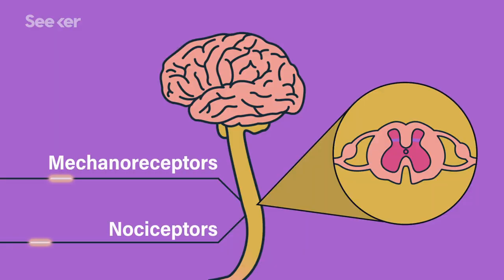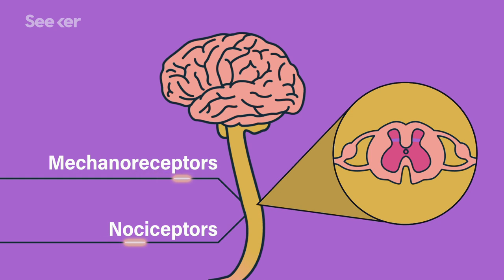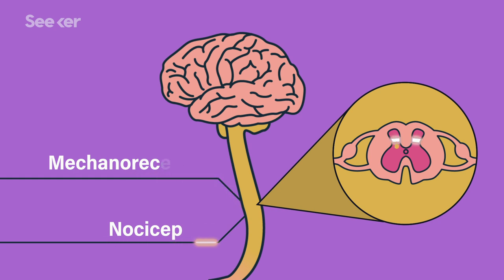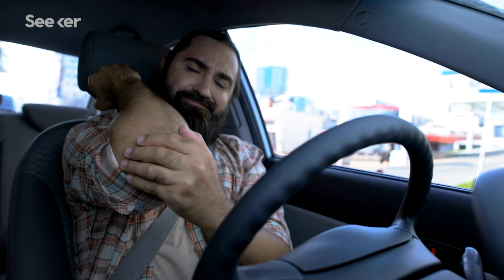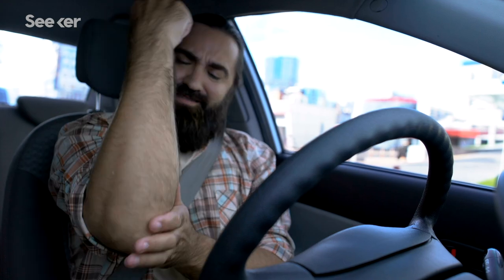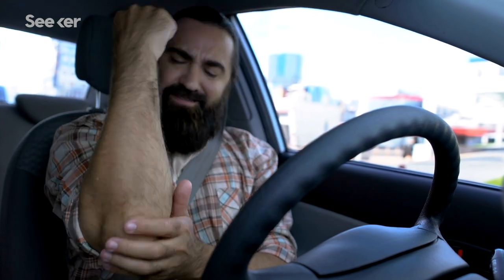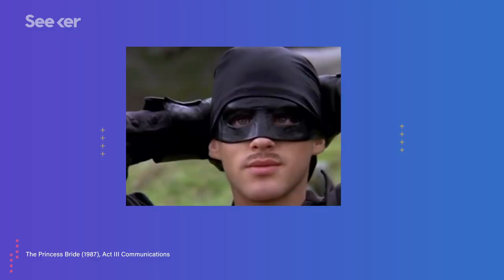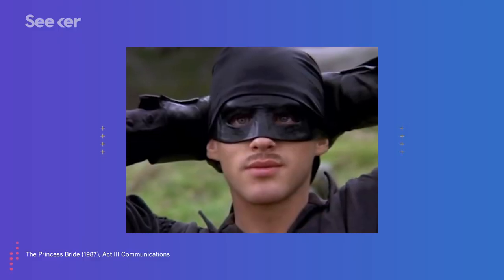But the mechanoreceptors are myelinated too. So if you stimulate any of the non-painful touch receptors, that signal arrives at the substantia gelatinosa first, closing the gate. That's why rubbing a banged-up elbow works — you're taking advantage of the gate control theory. Then again, it might all be in vain. Life is pain, and anyone who says otherwise is selling something.